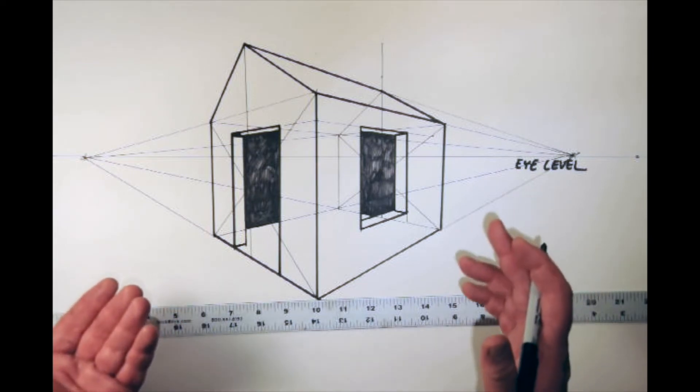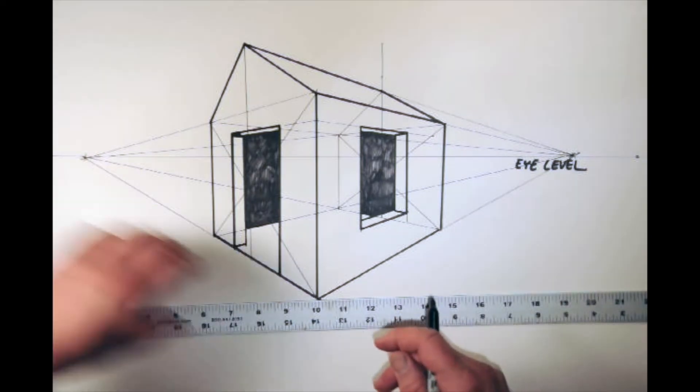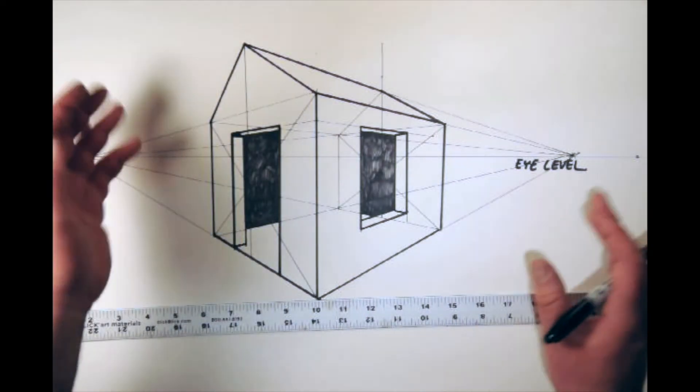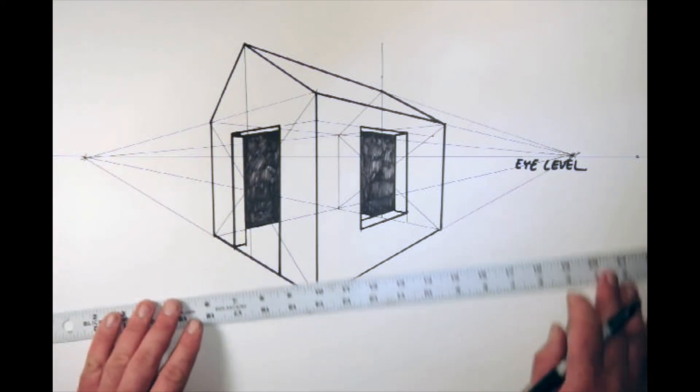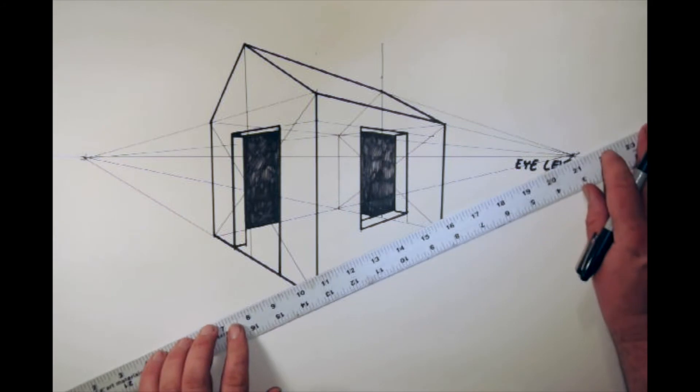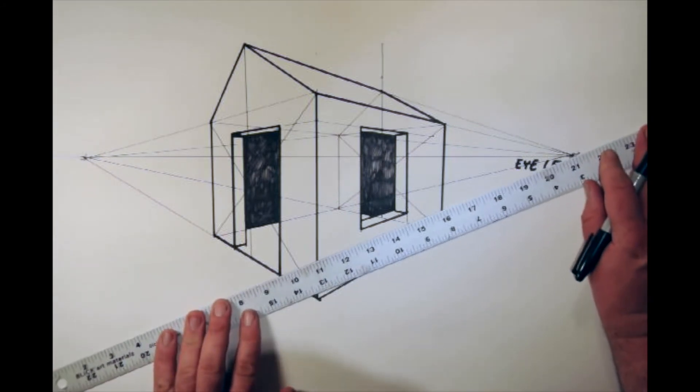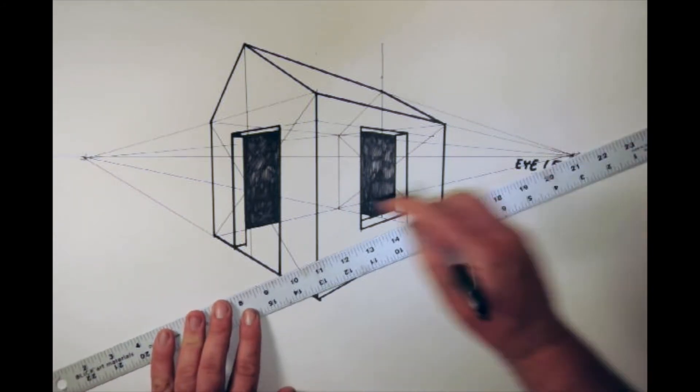But if you'd like to add some more fun things like a sidewalk or some trees, that would be awesome. And let me just show you what that can look like. Go ahead and maybe I'll draw a little walkway that goes out of the door.